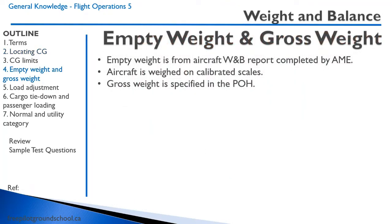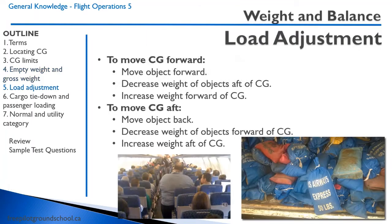Remember: the empty weight comes from the aircraft weight and balance report completed by the AME, weighed on calibrated scales, and the gross weight is specified in the pilot operating handbook. To adjust the load — if you need to move the center of gravity forward, you can move an object forward, decrease the weight of objects aft of the CG, or increase the weight of something forward of the CG. To move the CG aft, move objects back, decrease forward weight, or increase aft weight.